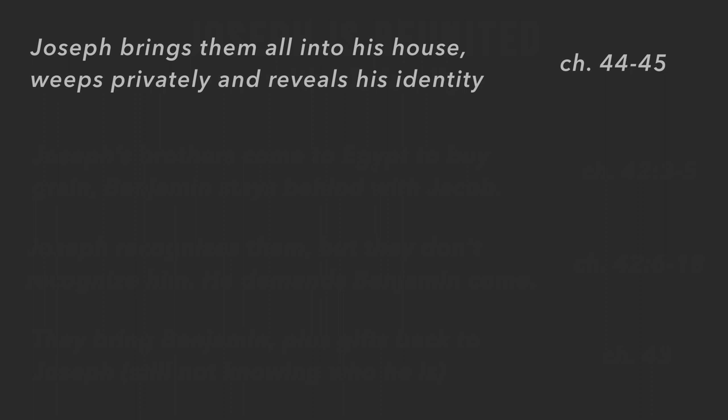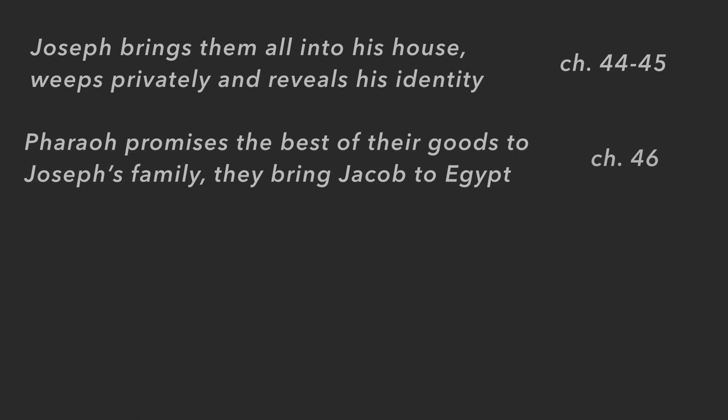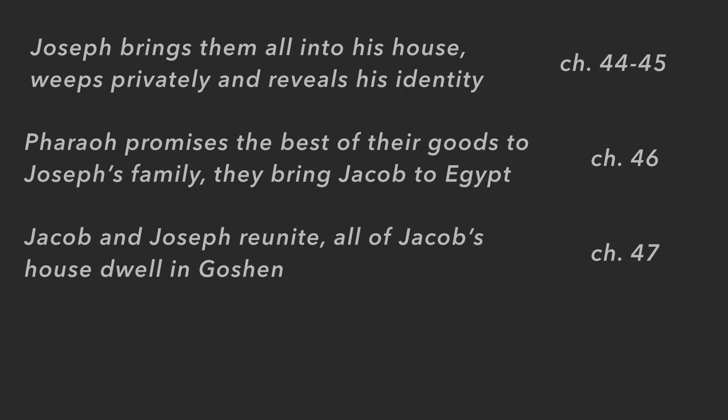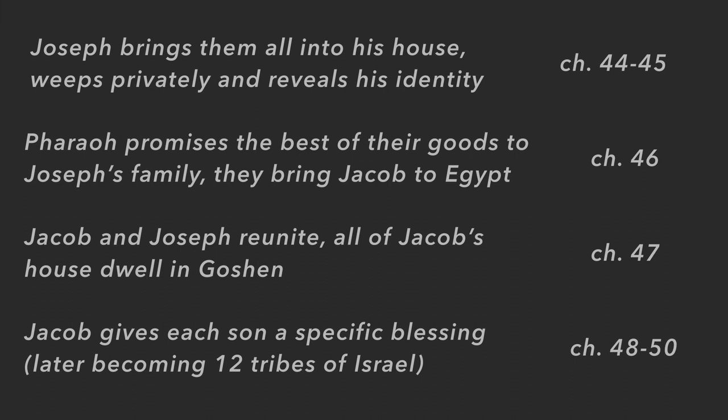In chapter 44, Joseph brings them all into his house. There are several moments where he can barely hold it together because he so wants to reconcile with his brothers. Finally in Genesis 45, he reveals himself: 'I am Joseph — the one you sold.' Pharaoh then promises the best of the land to Joseph's family. Joseph asks, 'Is my father still alive?' They go back to Canaan to get Jacob and bring him to Egypt in Genesis 46. Jacob and Joseph reunite, and Jacob's entire household makes the journey to Egypt.